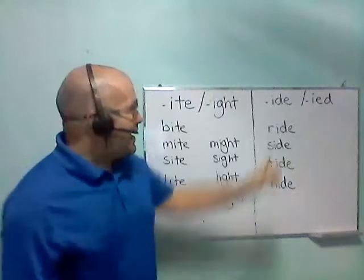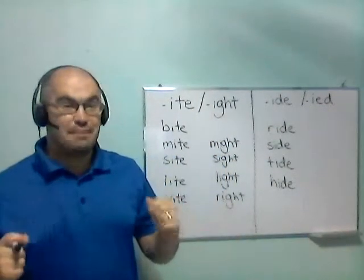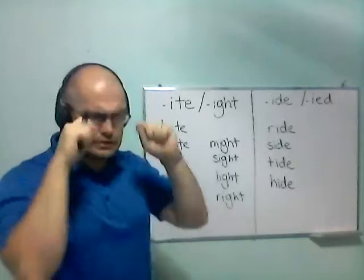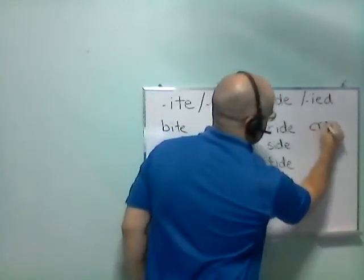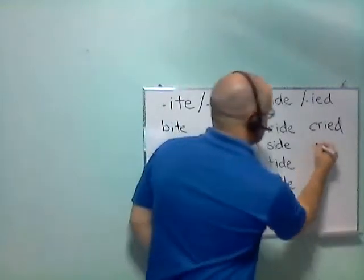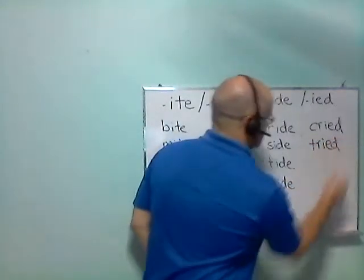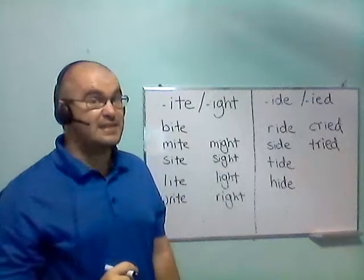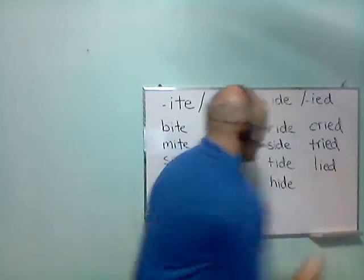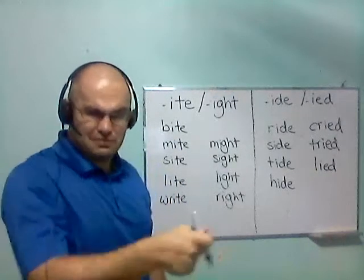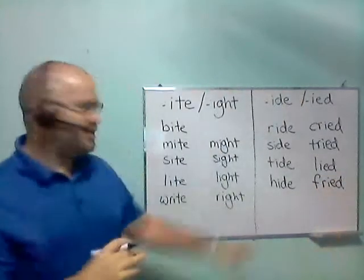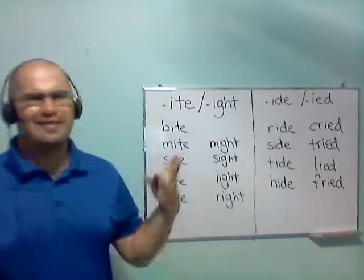And what about I-E-D? A lot of times, it's the past tense of a verb that ends in Y. So, cried. I cried. Tried. I tried. I failed, but I tried. Lied. I did not tell the truth. Fried, like cooking, when you cook something, fried. All right, so that's good for now. We'll talk about it some more later. There are really a ton.